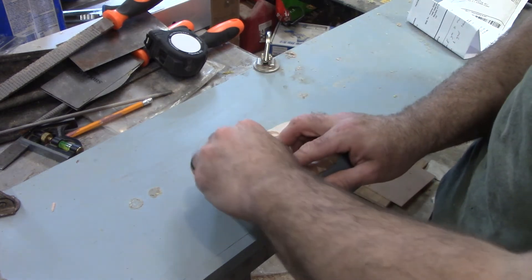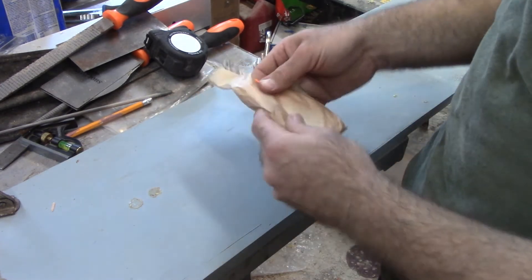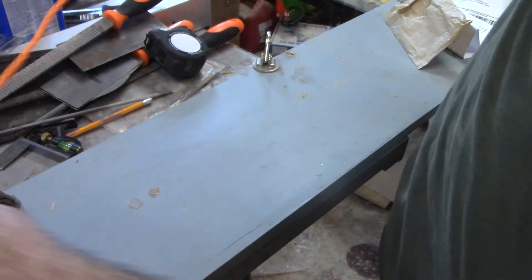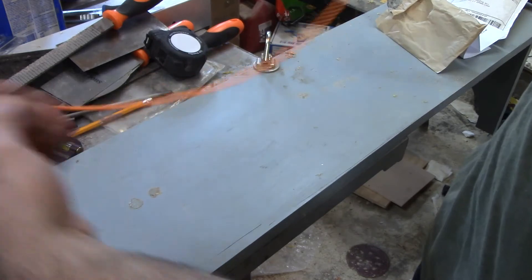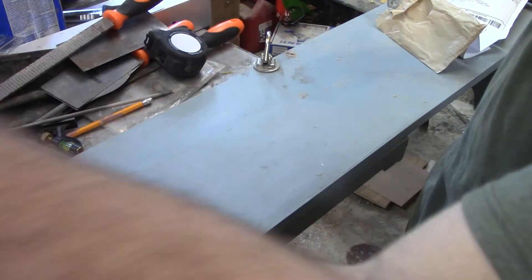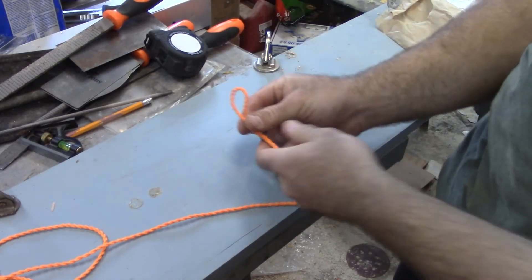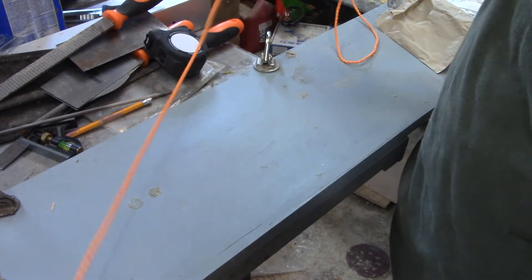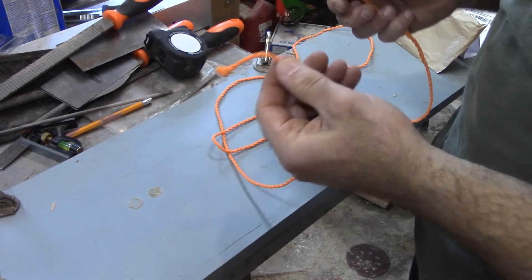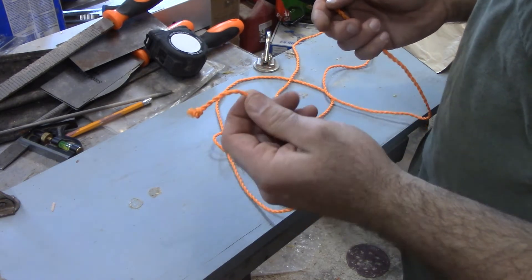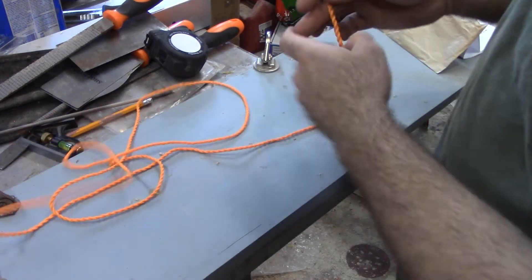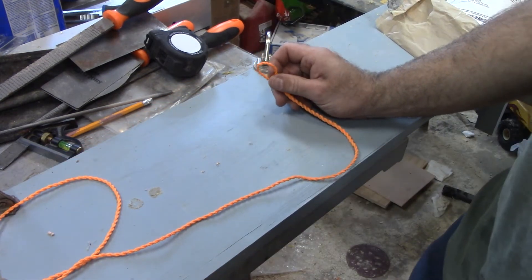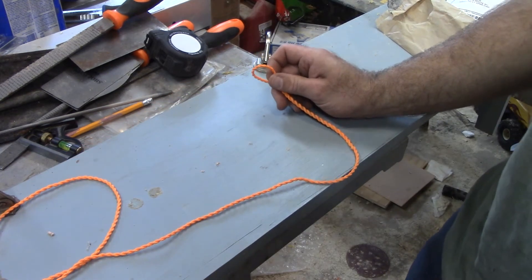We'll go ahead and get this out of here. All right, here's our string. So it's got a loop on one end and then it's just tied off on the other end, that way you could make it fit whatever size bow you're working on. So we're gonna go ahead and try and put this on our bow now that we've got our notches cut into it.